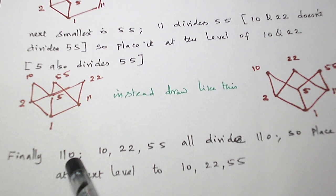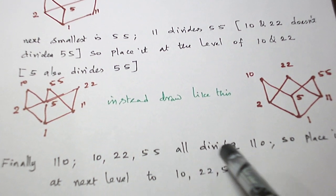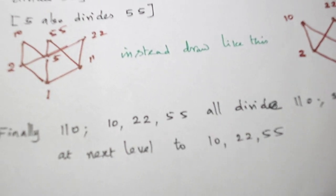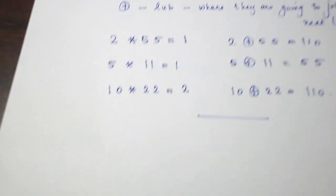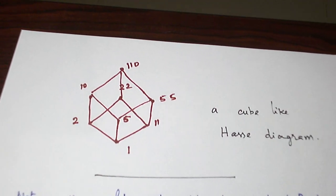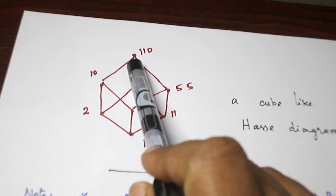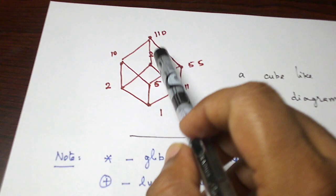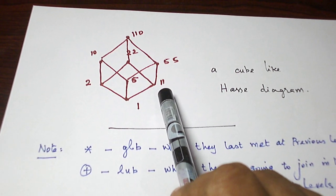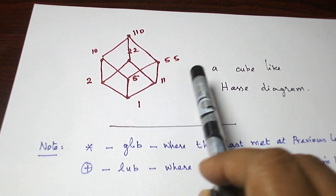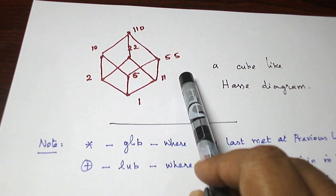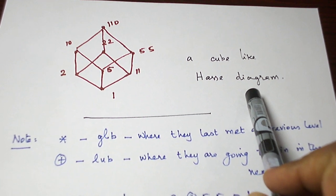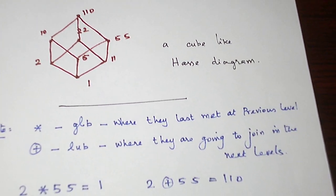And finally, the last element is 110. 10, 22, 55 all divide 110, so we can place 110 in the next level to 10, 22, and 55. 10 divides 110, 22 divides 110, 55 divides 110. So this is the way we have to draw the Hasse Diagram. And for, it's 8 elements and it has to look like a cube. That will look nice for a Hasse Diagram.